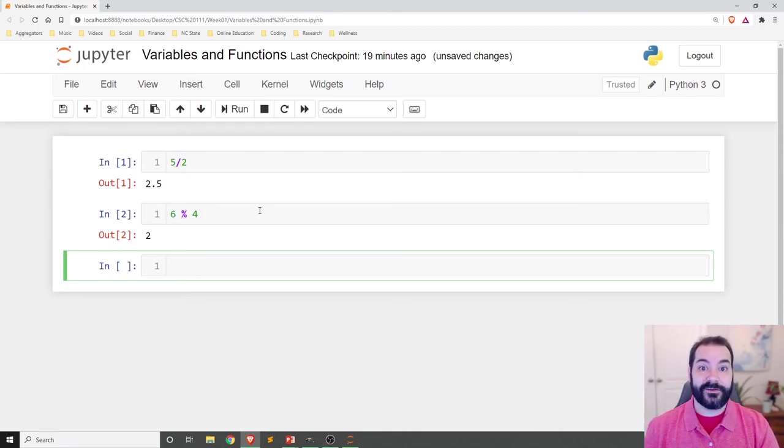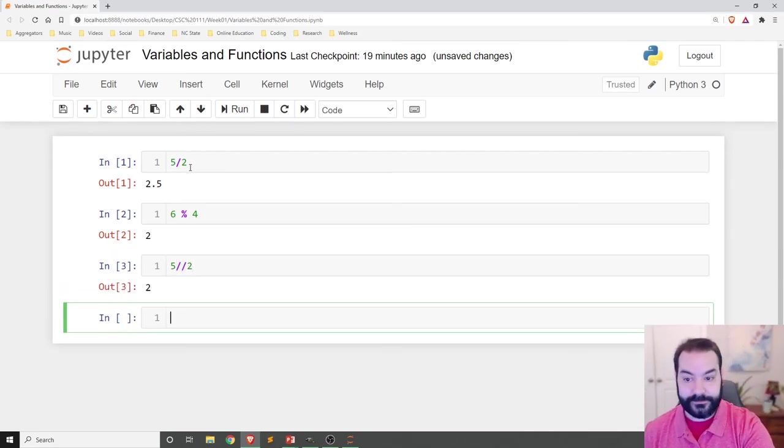There is some funky stuff that we can do as well. You saw that 5 slash 2 was going to give us division. If I did 5 slash slash 2, that does integer division. It will not actually give me the decimal place. It returns it as a whole number. So it just completely throws out any form of remainder whatsoever. But we can do different operations with these different commands, and it's important to sort of understand them as well.